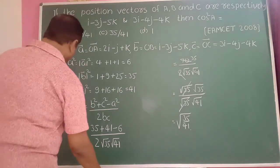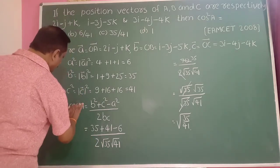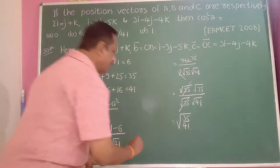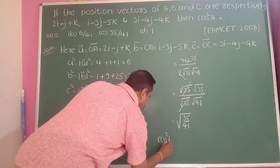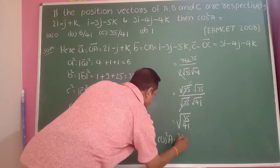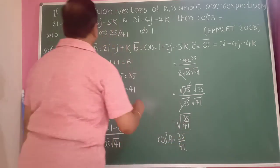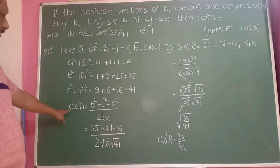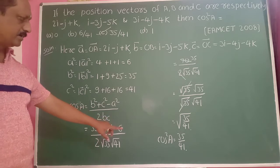It is not cos squared here, it is cos A that equals this formula. Squaring both sides, cos squared A is equal to 35 divided by 41.